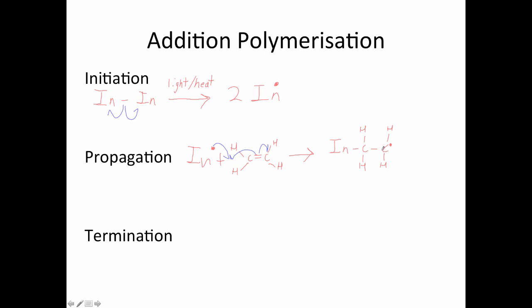As we can see, now this carbon on the end is a radical. That means it can now attack another monomer, as I'll show you by this mechanism in the step below.